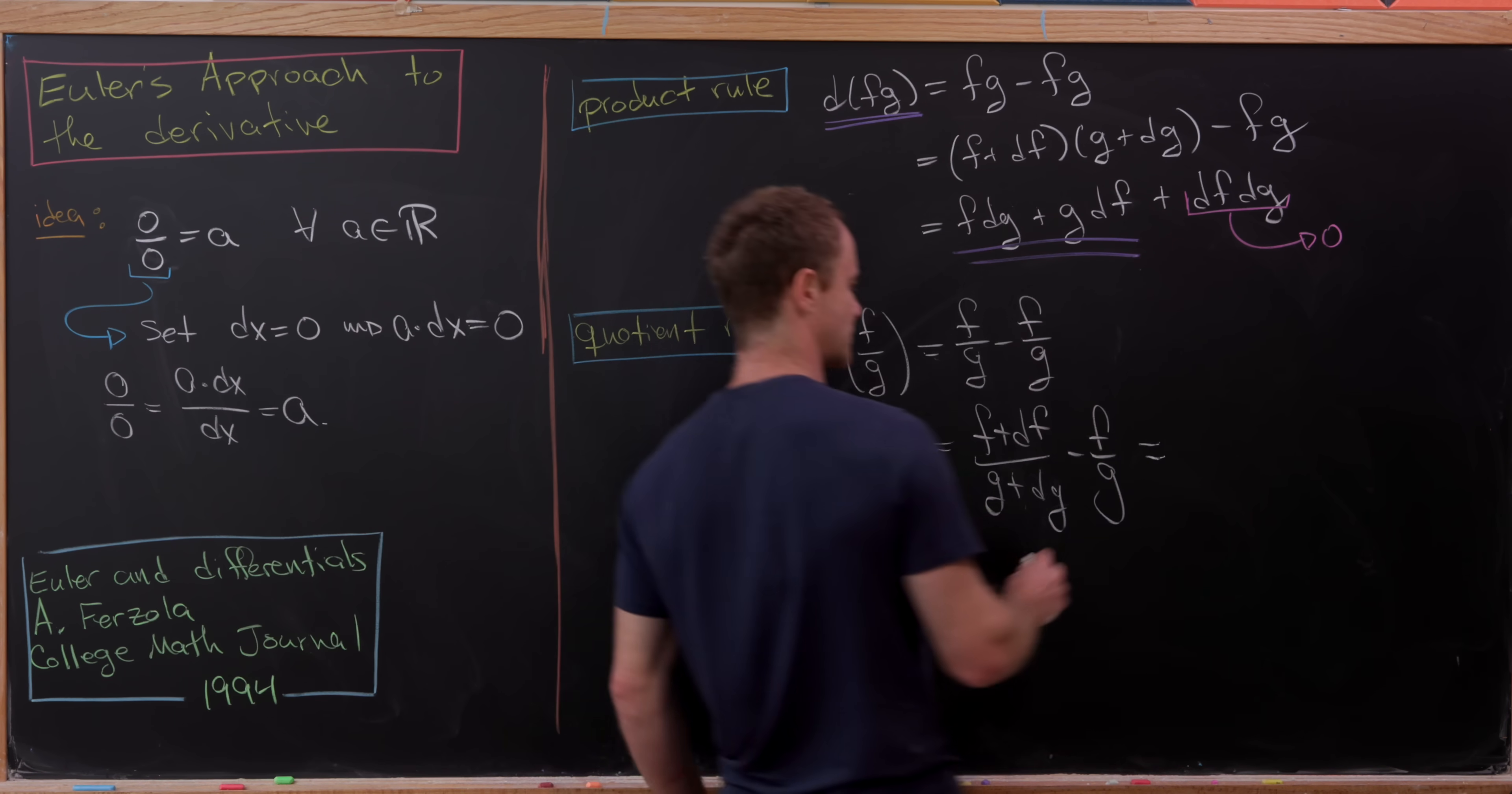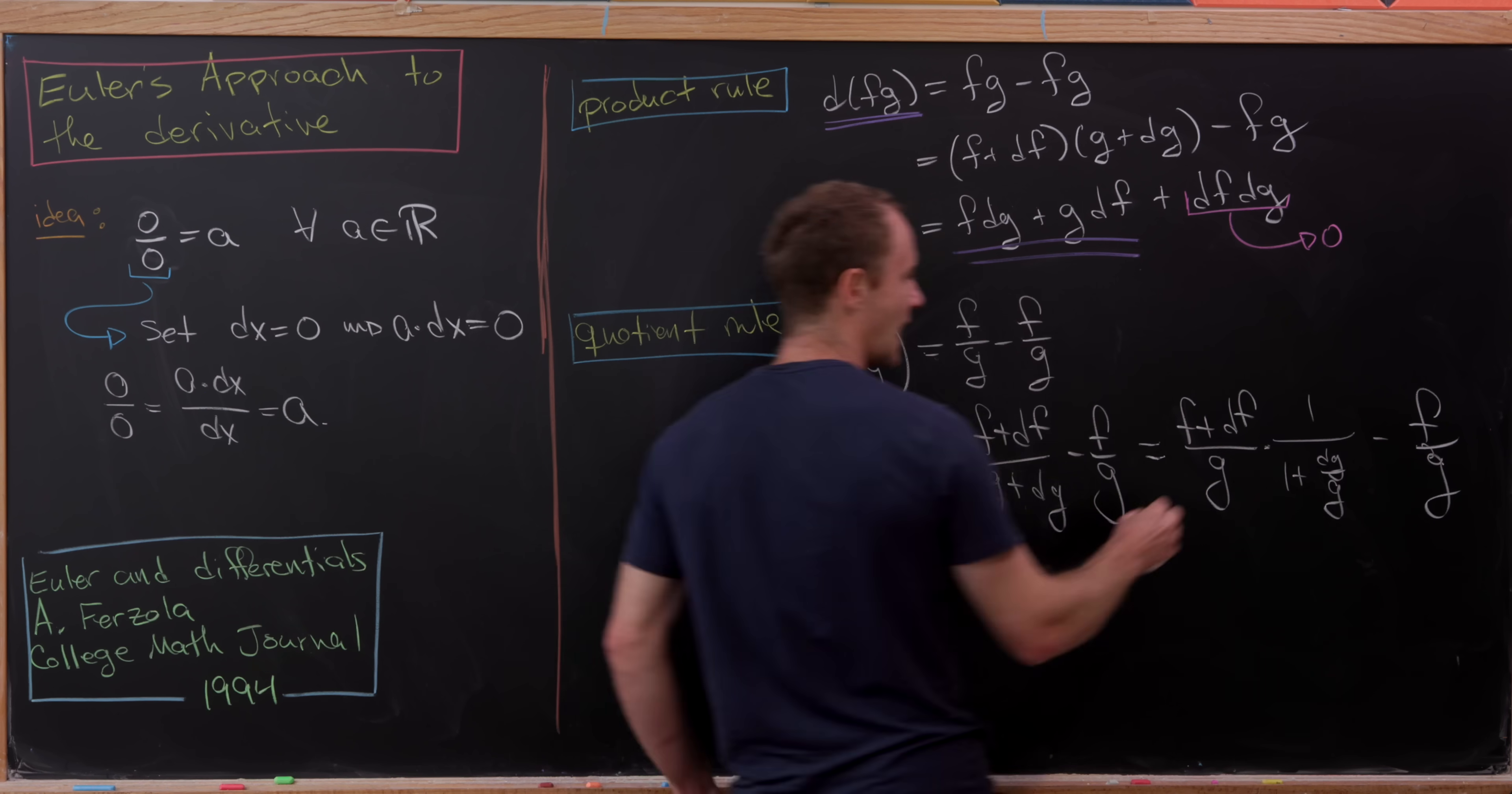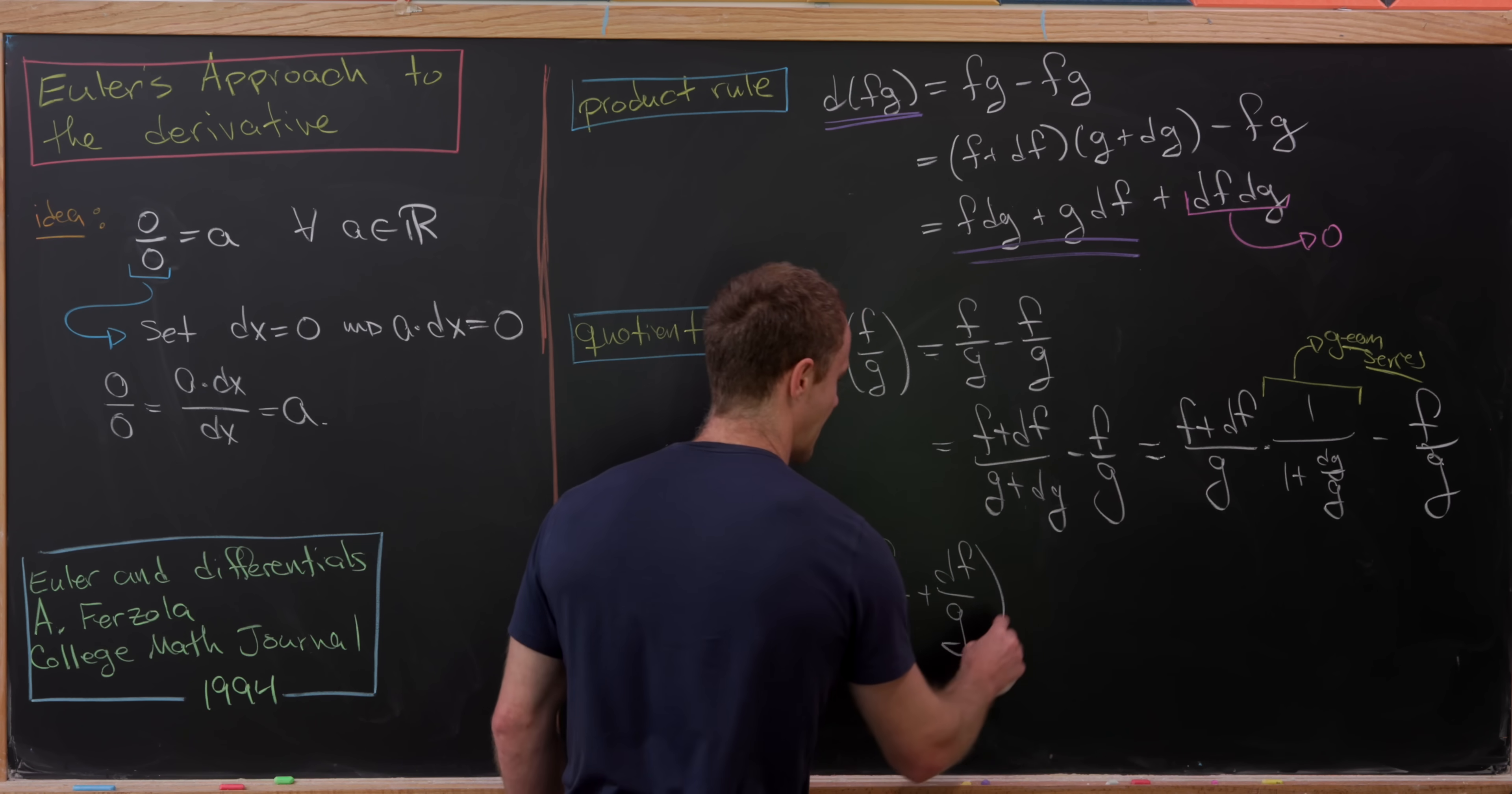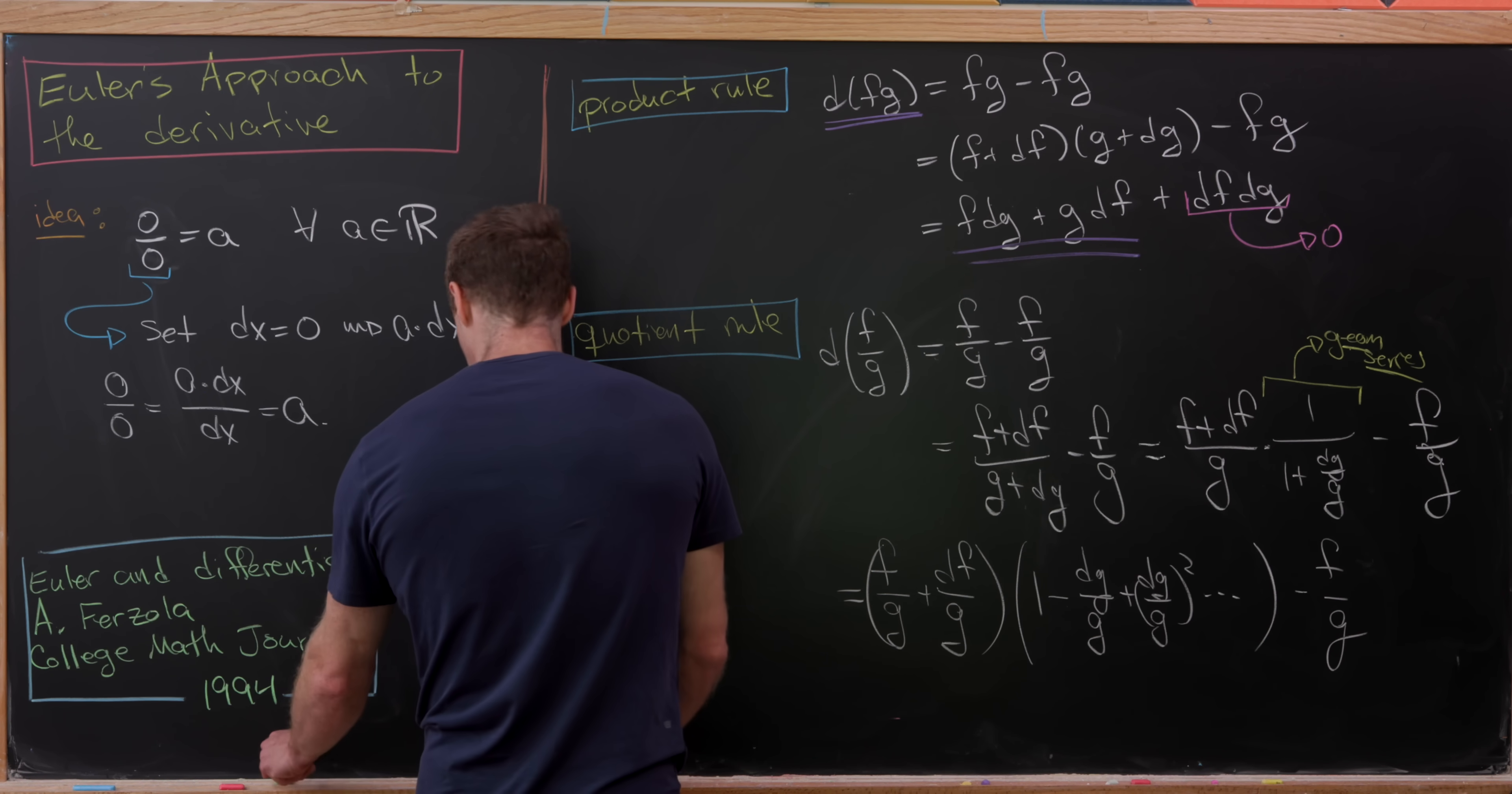But now let's manipulate this first term. So I'm going to write this as F plus DF over G times one over one plus DG over G. And then we still have to subtract F over G. But now we'll do a geometric series expansion on this one over one plus DG over G term. So what do we get? F over G plus DF over G. So that's just by rewriting that. And then that's all multiplied into one minus DG over G plus DG over G quantity squared. And then infinitely more terms, because again, we're expanding this as a geometric series. And then from that, we subtract F over G.